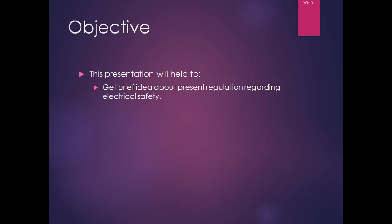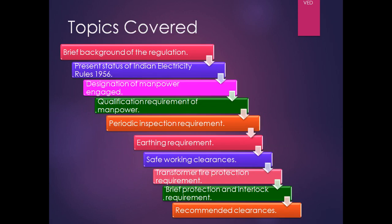The objective of this presentation is to help get a brief idea about the present regulation regarding electrical safety in India. The topics covered are: brief background of the regulation, the present status of Indian Electricity Rules 1956, designation of manpower engaged and related regulations, their qualification requirements, periodic inspection requirements, earthing requirements, safe working clearances, transformer fire protection requirements, brief protection and interlock requirements, and recommended clearances. There are other topics also covered in the presentation.